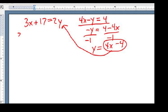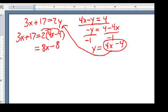Which gives me 3x plus 17 equals 2 times 4x minus 4. Use the distributive property and get 8x minus 8 and 3x plus 17.